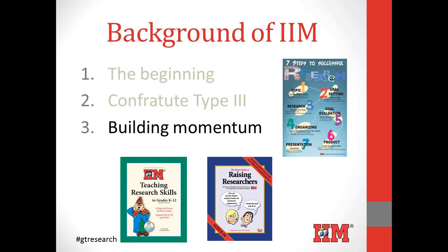A lot of research now is kind of like a summarized book report. How does IIM help students do authentic research? We're not looking for a book report or fact gathering — those have their purpose, but that's not what research is. Research is question-driven: gathering information from a variety of resource types, organizing it, analyzing it, and synthesizing it for a new end product. As we go through step by step, you'll see the different places in the seven steps where students use a variety of resources and really do that organizing, thinking, and synthesizing — so they have a research end product, not a book report.